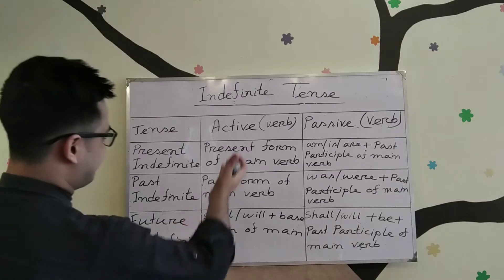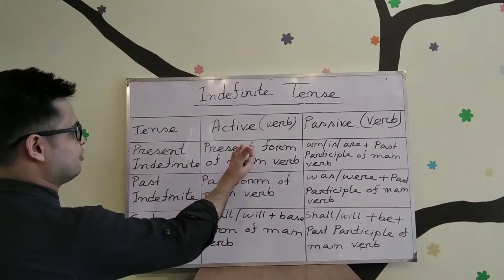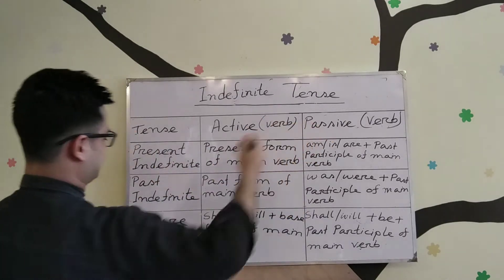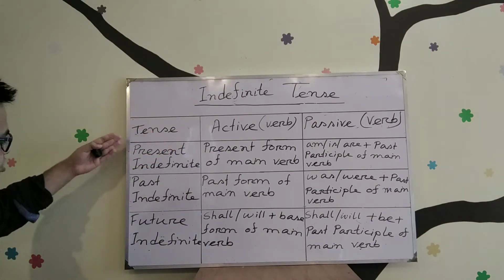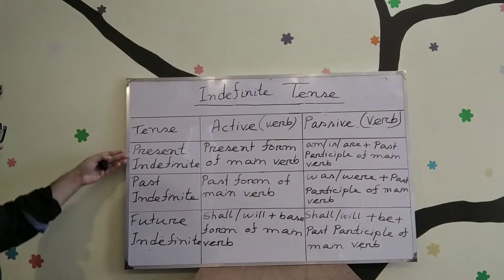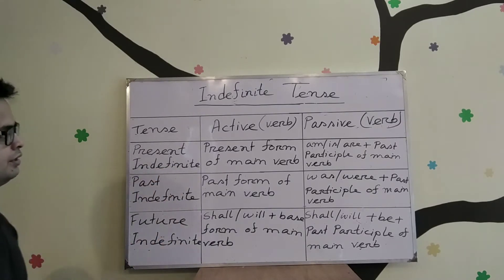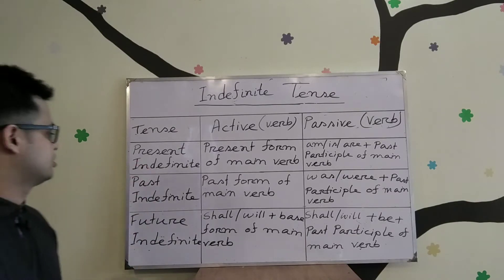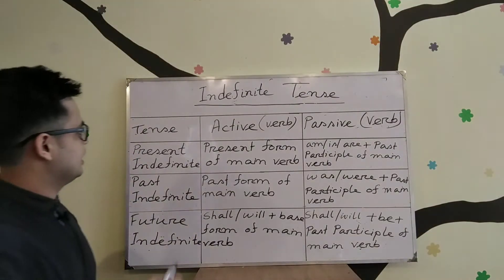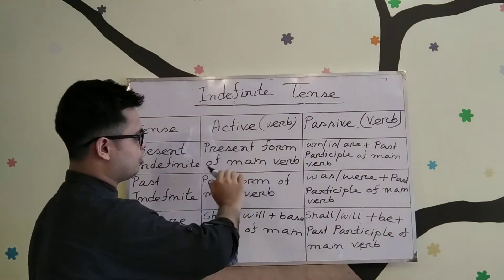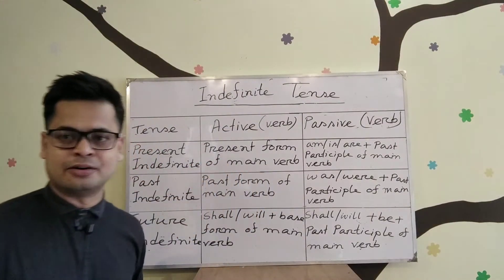Here I have shown different forms of verbs used in active voice and passive voice, categorized into three tenses. Let's talk about present indefinite tense, where we use the present form of the main verb.